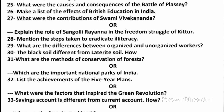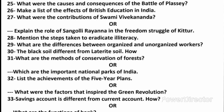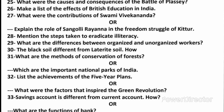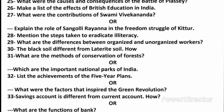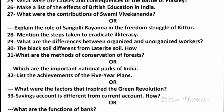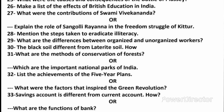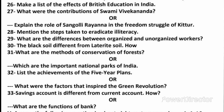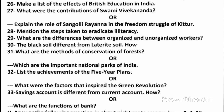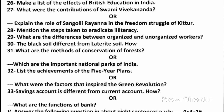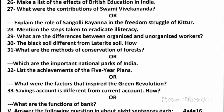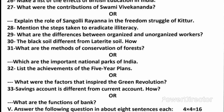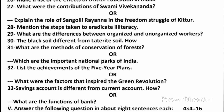Question 32: List the achievements of the five-year plans. Answer: The pace of growth of national income has gradually increased. The growth of per capita income has also increased. Self-sufficiency in food grain production has been achieved. Employment opportunities have increased due to the expansion of industry and service sectors. There has been immense progress in the field of science and technology. Life expectancy and literacy rate of people are increasing. Infant mortality rate and maternal mortality rates are decreasing. Both birth and death rates are decreasing, and the population growth rate is decreasing.